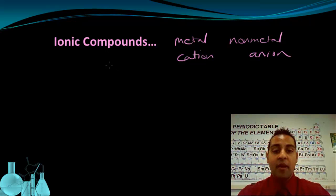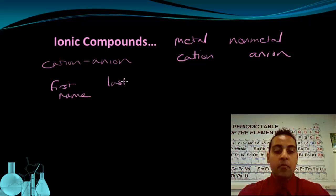For naming ionic compounds, we always name the metal first and then the nonmetal. So cation always first, then anion. Sort of like a first name and a last name. The metal cation is going to be the first name, and the nonmetal anion will be the last name for all of our ionic compound naming.